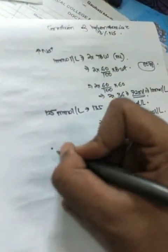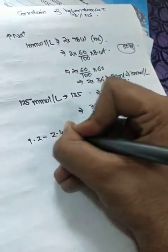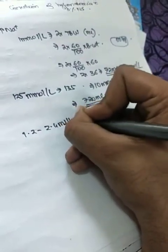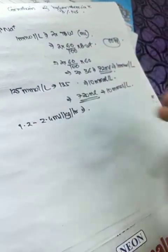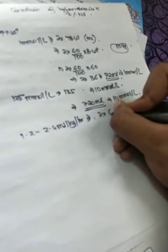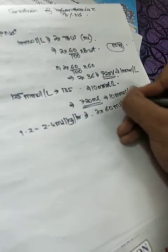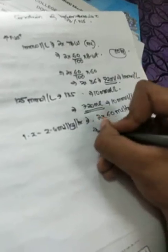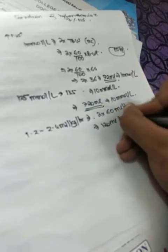Now infusion rates are recommended at 1.2 to 2.4 ml per kg per hour. So that is, you take 2, so 2 into weight is 60 ml should be given in 1 hour. So that is 120 ml can be given in 1 hour.